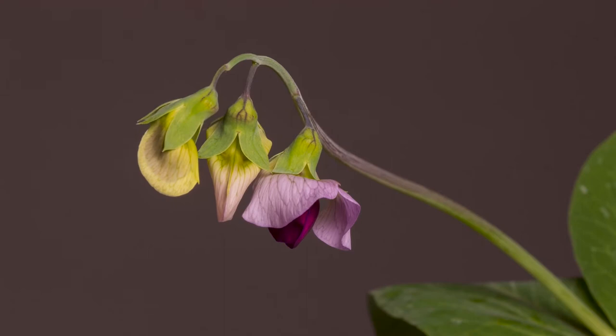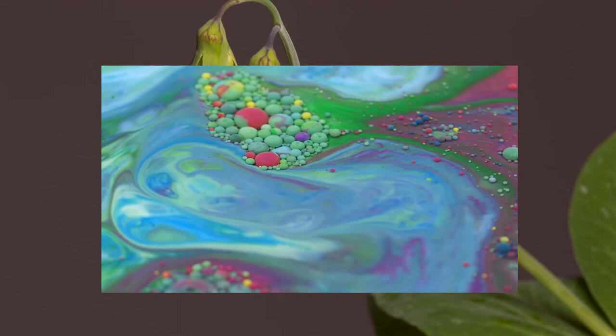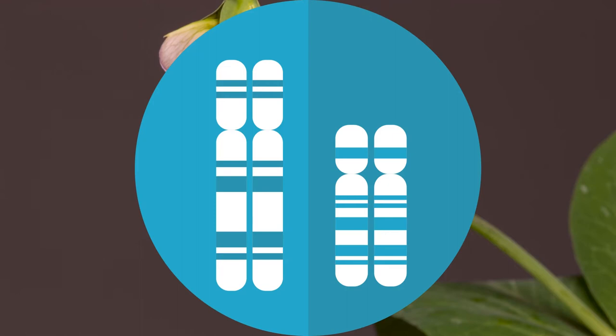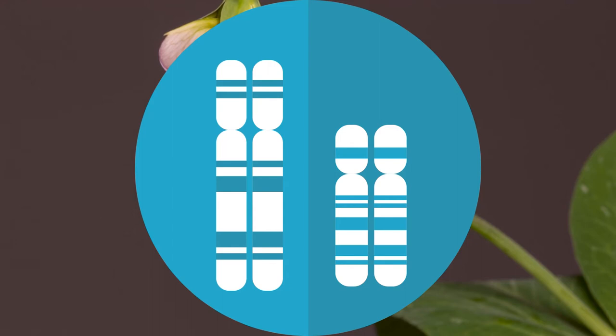Gregor Mendel thought these complex mechanisms were caused by specific parts of the inherited trait that could be interchanged. This went against the existing concept of essences, which were thought to be like paint and so could be blended, where you would get a mixture of the two at the end. We now know that Gregor Mendel's more complex underlying parts are alleles, and we have also understood why some traits are not a simple case of inheriting a single gene that will then be expressed if it comes from the right parent.